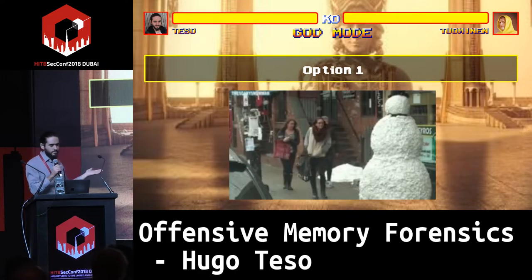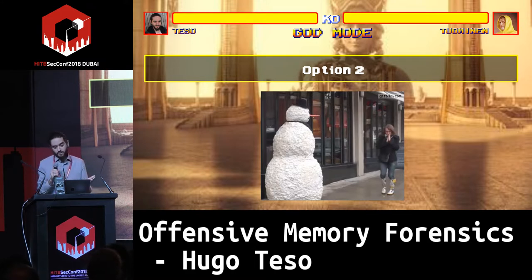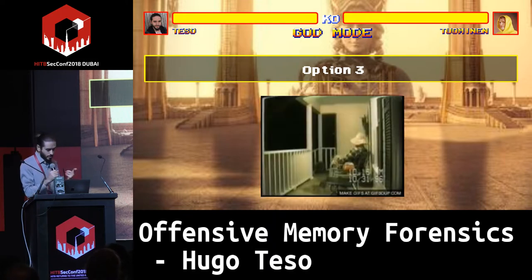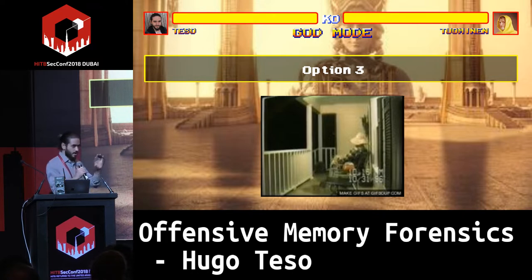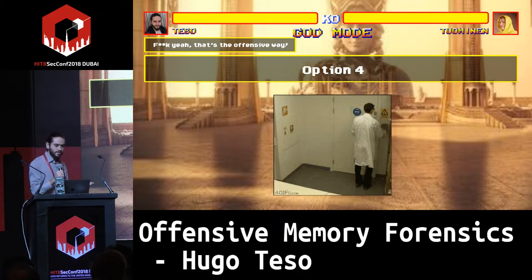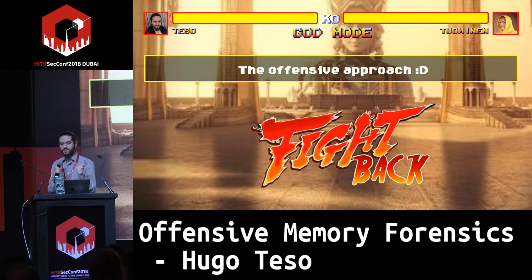Other options: just stay in memory and hope they don't detect you — bad luck if they do. Or take active measures to avoid detection, but if they find you, you're done. I came up with the fourth option — the one I like: if they're going to fight you, you fight back. That's what I call the offensive approach — Offensive Memory Forensics. The idea is to bring the fight to your own area of expertise instead of theirs.